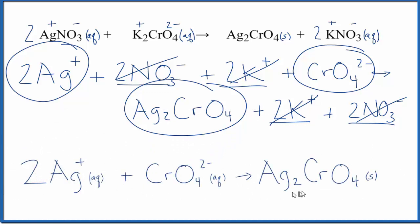And this is the net ionic equation for AgNO3 plus K2CrO4, silver nitrate plus potassium chromate. And this is Dr. B. Thanks for watching.